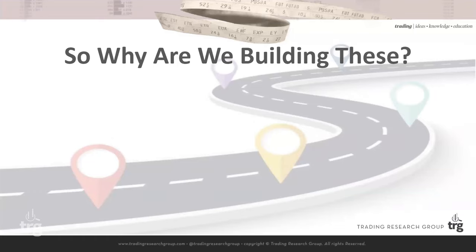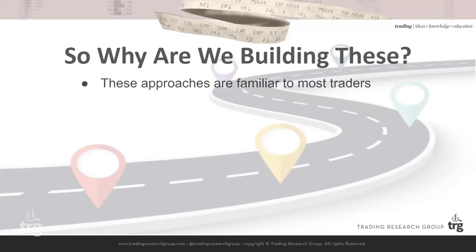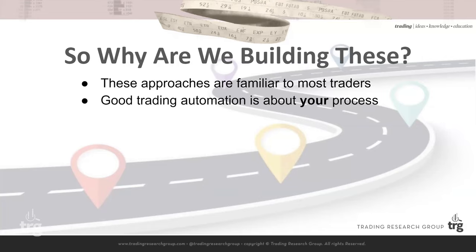So if these systems always lose money, why are we building them? These TA indicator approaches are familiar to people, so we can focus on the platform side of things — the how, because that's what this is about. I'm not teaching trading here; I'm teaching how to automate, how to build things, how to take an idea — I wonder if there's an edge to whatever — and actually build it into something you can test and validate. These approaches are something simple that people know, so nobody gets lost out of the gate.